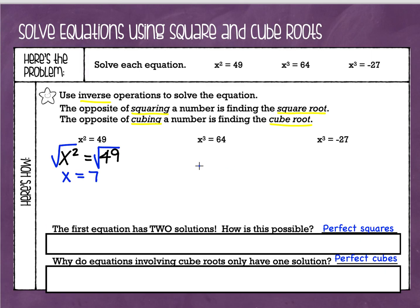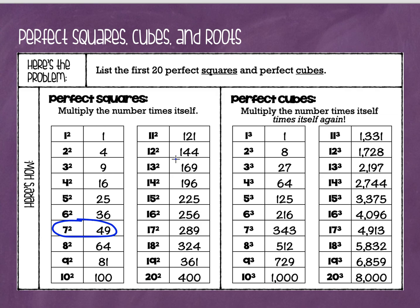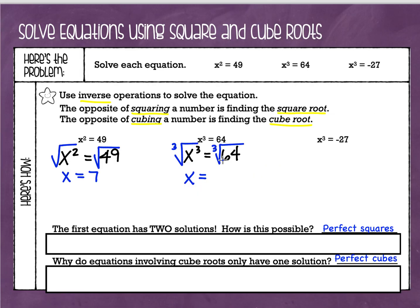Our next example: x cubed equals 64. I'll rewrite that equation to give myself a little more room. The opposite of putting a number to the third power is finding the cube root. So we're going to take the cube root on both sides. Now be careful — this is a cube root. You might be tempted to say x equals 8, but x doesn't equal 8. If we look at the chart, 64 does appear on the perfect square side, but we're looking for a perfect cube this time. The cube root of 64 is 4, because 4 times 4 times 4 equals 64.